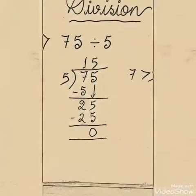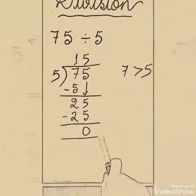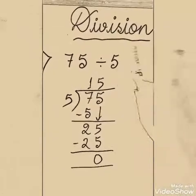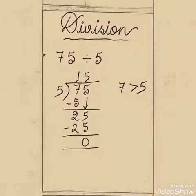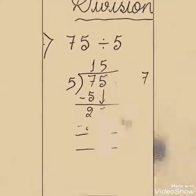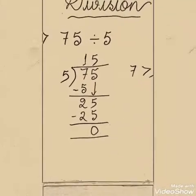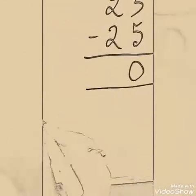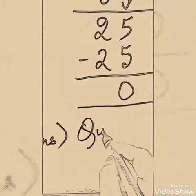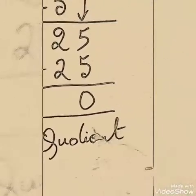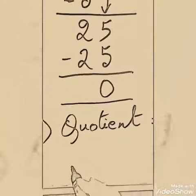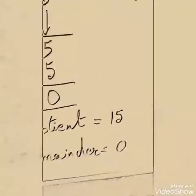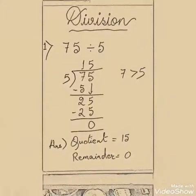So what is our quotient? 15 is our quotient and remainder is 0. So if we divide 75 balls into 5 children equally, how many balls will one child get? 15. And how many balls will be left over? 0 — no balls will be left over. So let's write our answer: Quotient is equal to 15, and remainder is equal to 0.